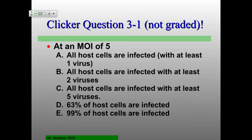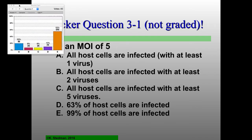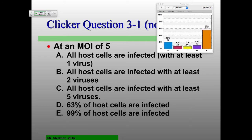So, what do we think? Let's look at the results. At an MOI of five, all host cells are infected with at least one, at least two, at least five, or 63% or 99% are infected. A number of people mentioned that they thought it might be A — that's the distractor question. The key here is that it's 'all host cells.' It's actually not all — it's going to be close to all. So that means E is the correct answer.